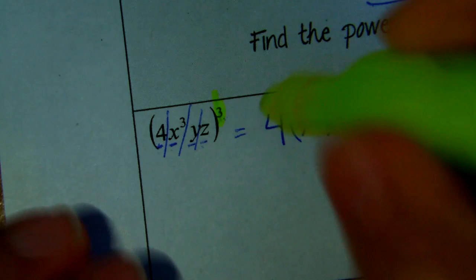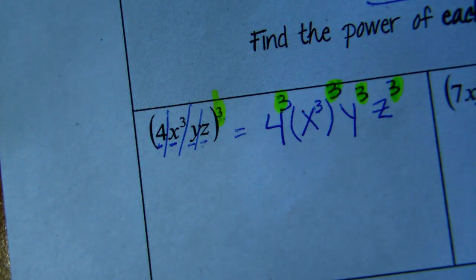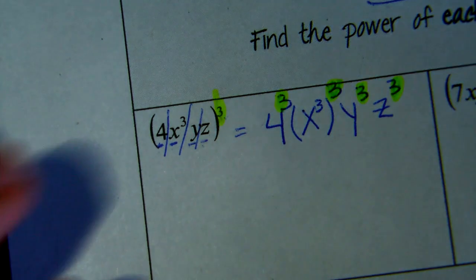So this power of 3, is like distributing it. Distributing the 3 to the 3 factors that you have here inside the parentheses.